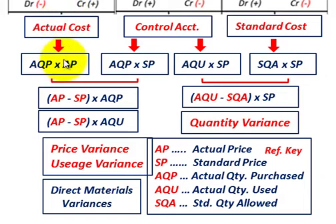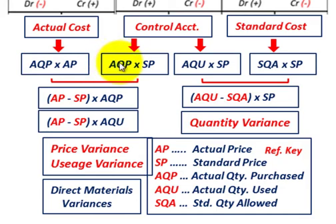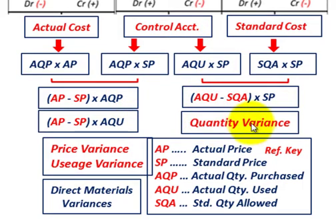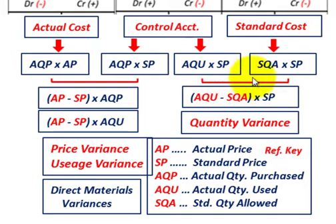I've broken them down here — you can see where our actual cost is compared to our control account. For example, actual quantity purchased times actual price is compared to actual quantity purchased times standard price. We just factor out actual quantity purchased from actual price and standard price. Similarly for the quantity variance, we compare actual quantity used times standard price to standard quantity allowed times standard price — just factoring out standard price to get the difference between actual quantity used and standard quantity allowed.